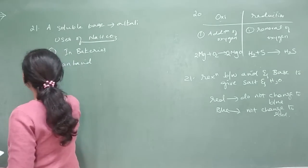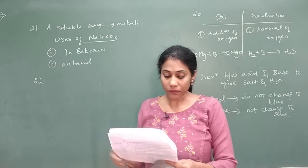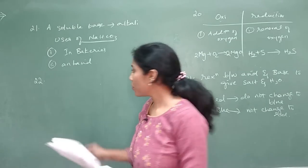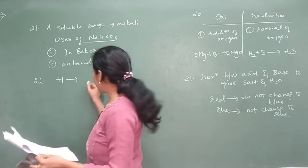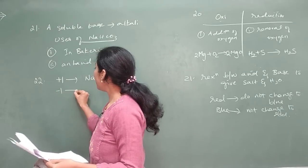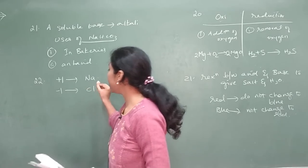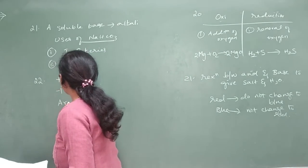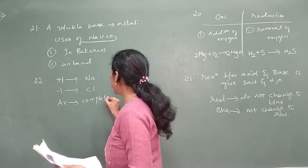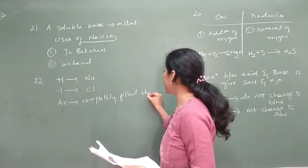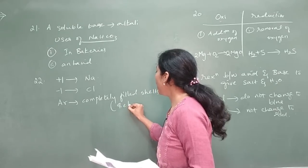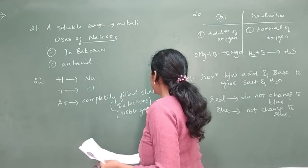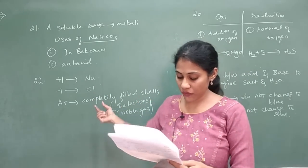Question 22 gives a table of third period elements with group numbers. Which elements have +1 and -1 valence? Plus one valence is shown by group 1 elements — sodium. Minus one valence is shown by group 17 elements — chlorine. Argon is placed in the 18th group because it has completely filled shells with 8 electrons in the outermost shell — it is a noble or inert gas.